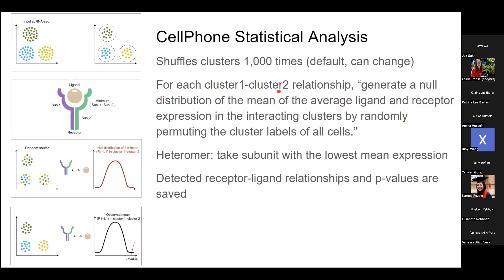They shuffle 1,000 times and generate a null distribution of the mean of the average ligand and receptor expression in the interacting clusters by permuting the cluster labels of all the cells.